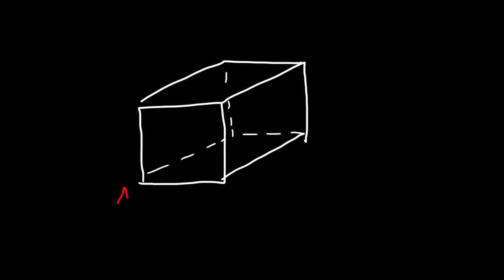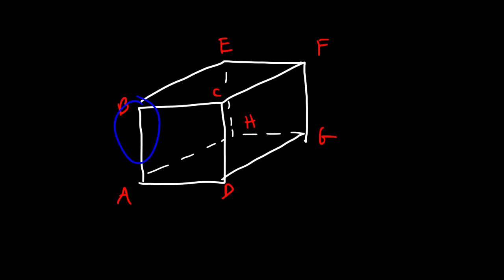Now let's look at this figure with points A, B, C, D, E, F, G, and H. What's the relationship between AB and CD? AB is parallel to CD — as we mentioned before, they exist in the same plane.